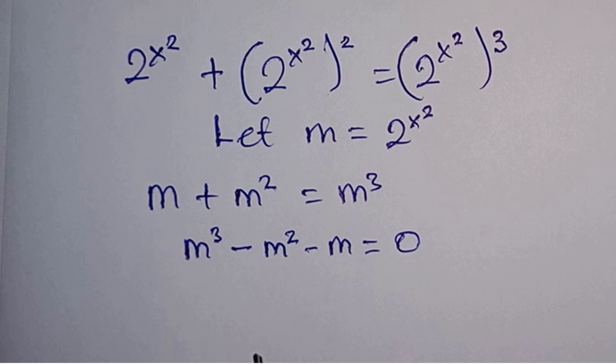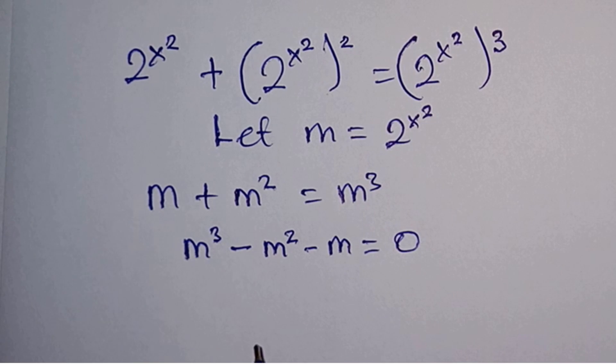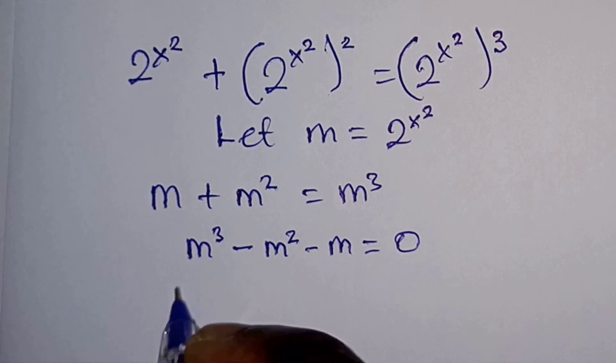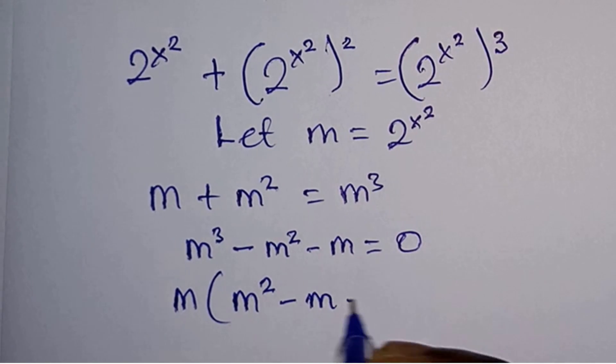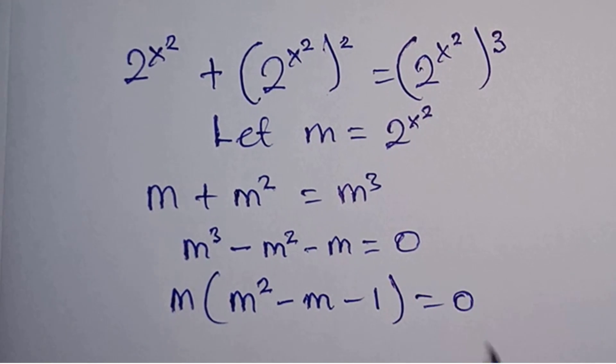This is a cubic equation. Some of you may like to use the cubic formula to solve this one, but I think we can take m out and then solve it. So we can have m(m² - m - 1) = 0.